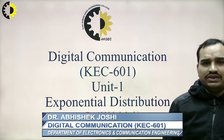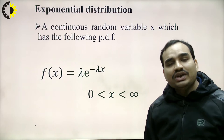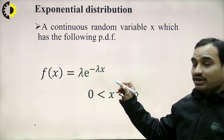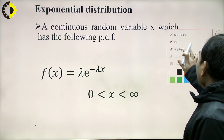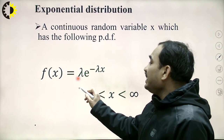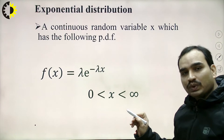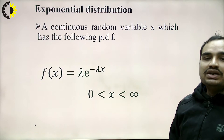How is the exponential distribution defined? We define the exponential distribution as a continuous random variable x which has the following PDF — probability density function. The PDF of the exponential distribution is given by f(x) = λe^(−λx), where the random variable x lies between 0 and infinity. This is the generalized definition of exponential distribution.